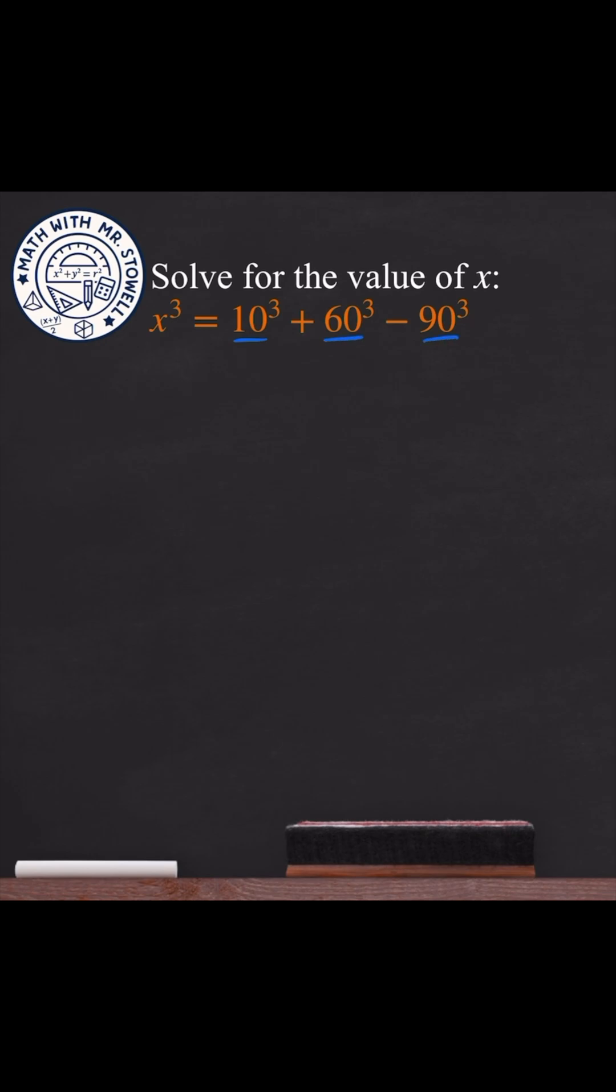Noticing that, we get x³ = 10³ + 6 × 10³ - 9 × 10³.